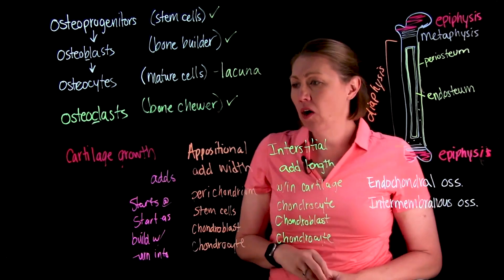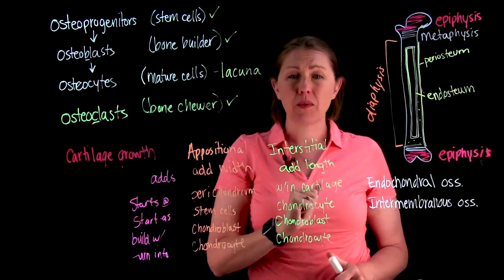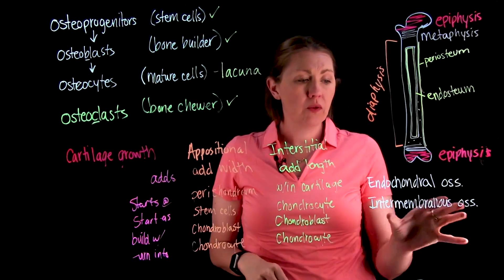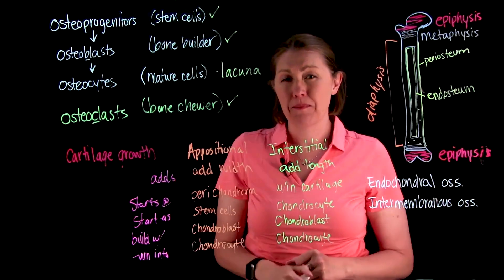I think for now, we have a good sense of kind of some of the anatomy, some of the cells, different ways we can form cartilage. And then we'll kind of swing back into a different video to talk about how that looks step by step. Okay. Thanks for watching.